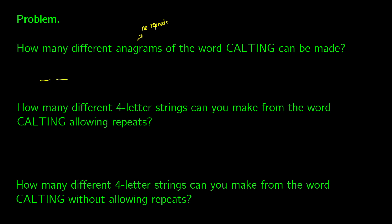So when we think about the seven letters that we have, we can ask ourselves how many we can choose from each one. So in our first letter, we have seven different choices. We can pick C, A, L, T, I, N, or G.